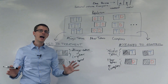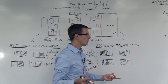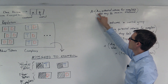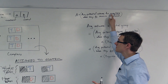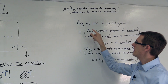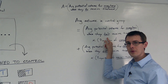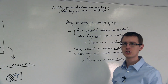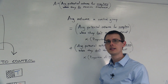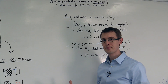So let's see how we get the local average treatment effect. Remember how it's defined: the local average treatment effect is the difference between the average potential outcome of compliers when they do receive treatment, minus the average potential outcome for compliers when they don't receive treatment. It's just the difference of those two averages for compliers.